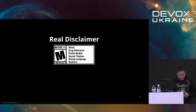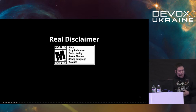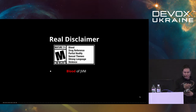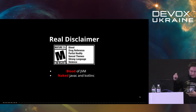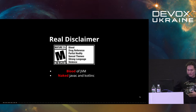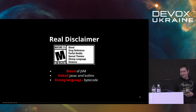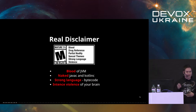Before we really start, here is a real disclaimer: there will be a little bit of blood out of JVM. If you're not ready, please leave the room. We will look really into javac, into the Kotlin compiler. We're not going to use Gradle to compile things — sorry for that. We're going to talk strong language, we're going to talk bytecode. We're going to intensively lens your brain — sorry for that again.